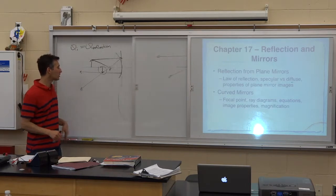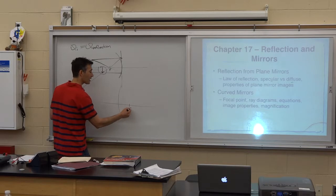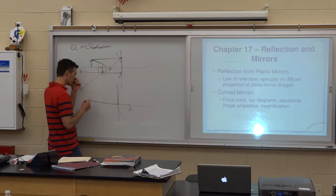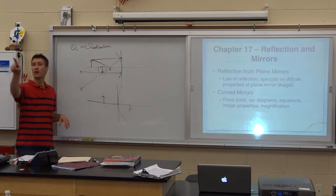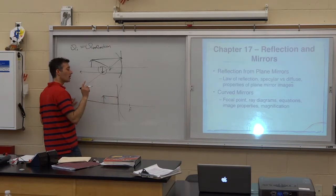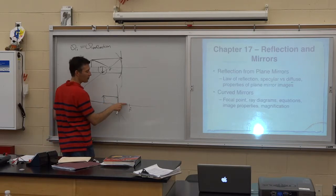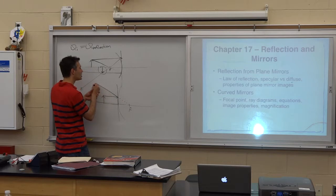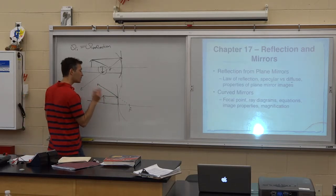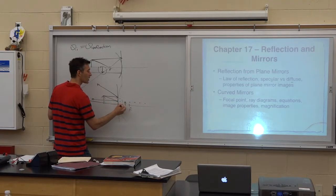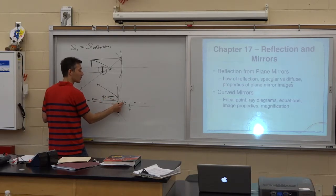We have convex mirrors as well. For convex mirrors, the focal point is on the virtual side of the mirror, and we actually always get the same image properties — this was like our shoplifting mirror. Ray one still goes parallel to the principal axis and still reflects, but it can't reflect through the focal point since that's on the other side of the mirror, so we use the focal point to guide the geometry of that reflected ray. Ray two aims towards the focal point on its way to the mirror and then reflects parallel to the principal axis. We extend those reflected rays back behind the mirror and always get an erect, virtual, smaller image.